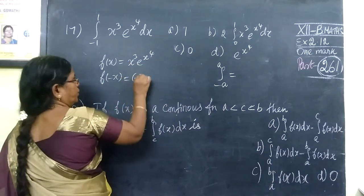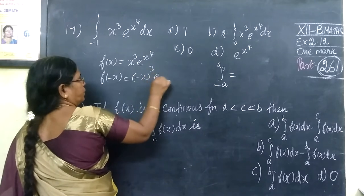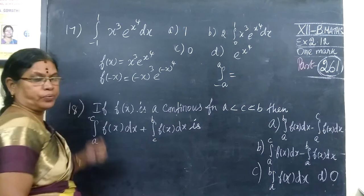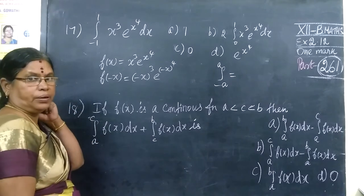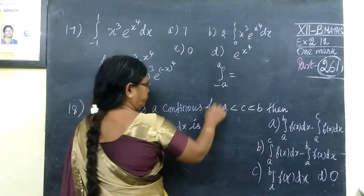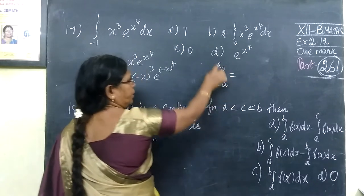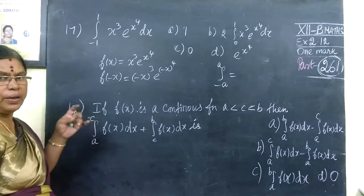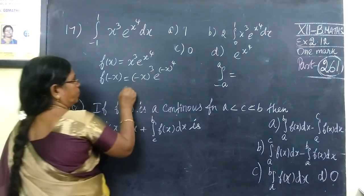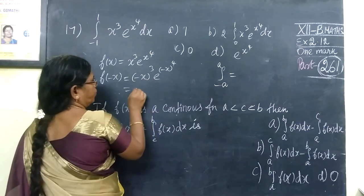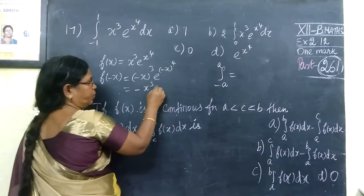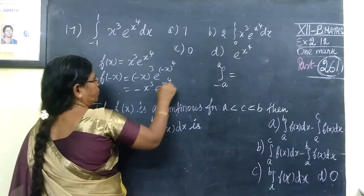If you just add x power 4, so this one is equal to x power 4. So first I apply and change minus a to plus a. You use f of x and f of minus x. Second is equal to x power 4.